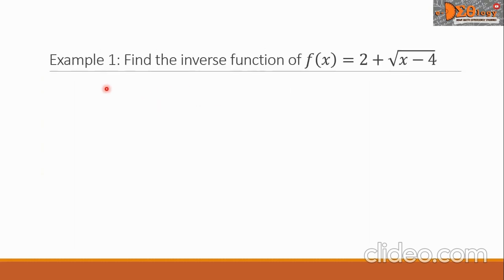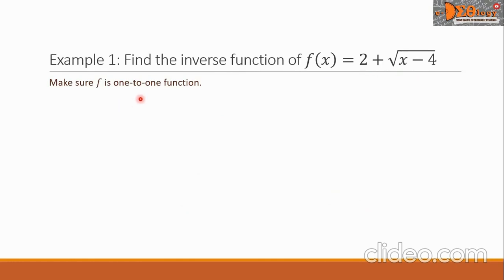Let's have Example 1. Find the inverse function of f of x equals 2 plus the square root of the quantity x minus 4. Step 1: Let us make sure that the given function is one-to-one. If we substitute any permissible values for x, we will always get a unique corresponding value for f of x. This means the function is a one-to-one function.